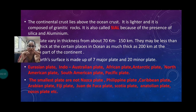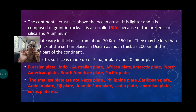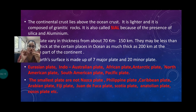The seven big plates are: the Eurasian plate, Indo-Australian plate, African plate, Antarctic plate, North American plate, South American plate, and Pacific plate. Some smaller but important plates you need to know are: Nazca plate, Philippine plate, Caribbean plate, Arabian plate, Fiji plate, Juan de Fuca plate, Scotia plate, Anatolian plate, and Cocos plate.